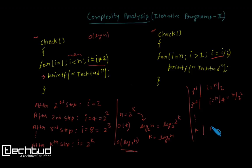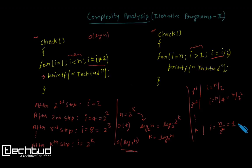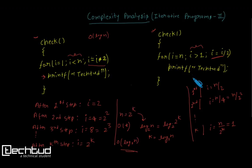After k steps, i becomes n / 2^k. When this equals 1 or less than 1, the condition i > 1 becomes false and the loop terminates. So at termination, n / 2^k = 1, and printf has executed a total of k times.